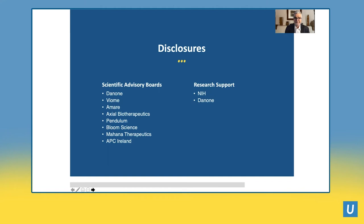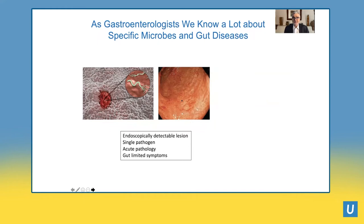As a gastroenterologist, we know a lot about specific microbes and gut diseases — that's what we're trained in. Endoscopy is the way to make these diagnoses. On the left side you see a gastric ulcer with H. pylori as a single organism; on the right side, you see an infectious enteritis. Typically these are characterized by endoscopically detectable lesions. Generally there's a single pathogen involved, which is well-studied in terms of its mechanisms. There's an acute pathology with inflammation and often ulcers or erosions, and the symptoms are typically limited to the gut, other than general symptoms of fatigue and not feeling well.